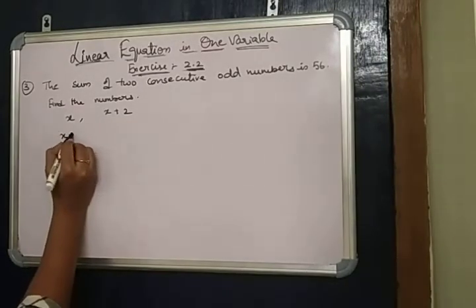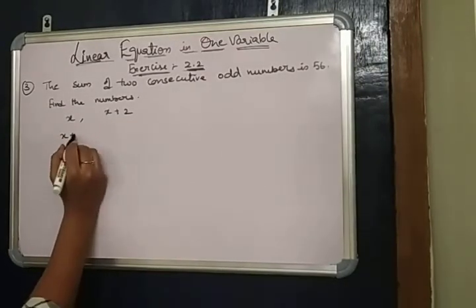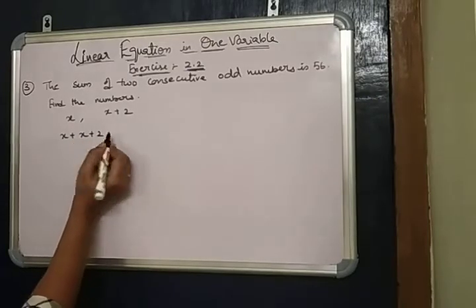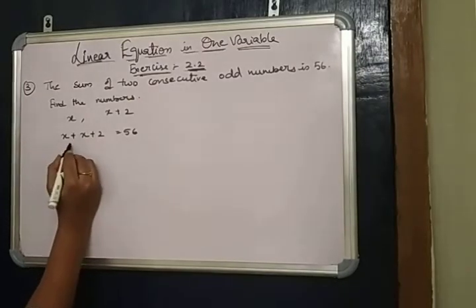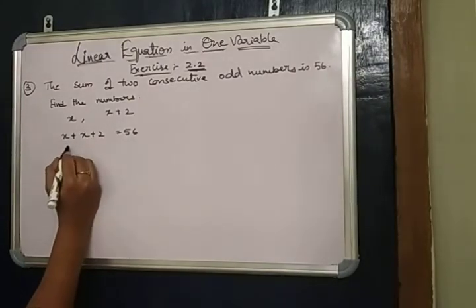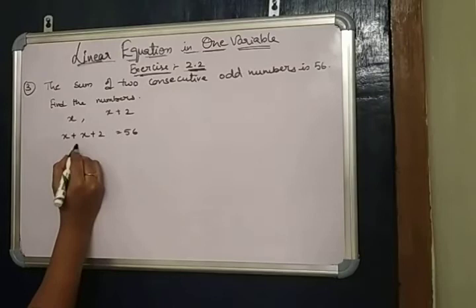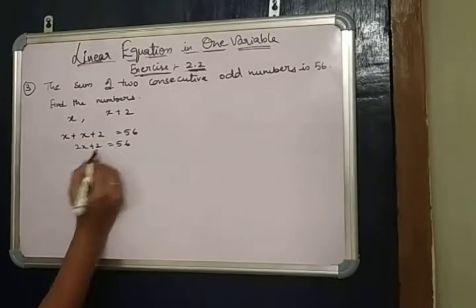Okay, further, X plus X plus 2 equals 56. X plus X is 2X plus 2 equals 56.